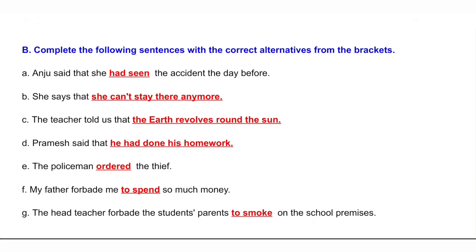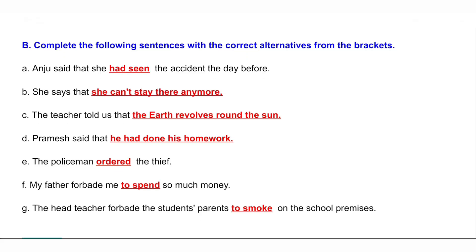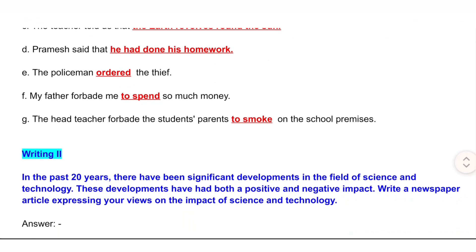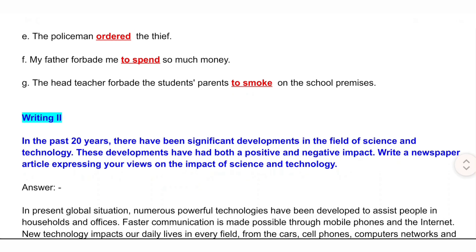B: Complete the following sentences with the correct alternatives from the brackets. A: Anju said that she had seen the accident the day before. B: She says that she can't stay there anymore. C: The teacher told us that the earth revolves round the sun. D: Pramesh said that he had done his homework. E: The policeman ordered the thief. F: My father forbade me to spend so much money. G: The head teacher forbade the students' parents to smoke on the school premises.